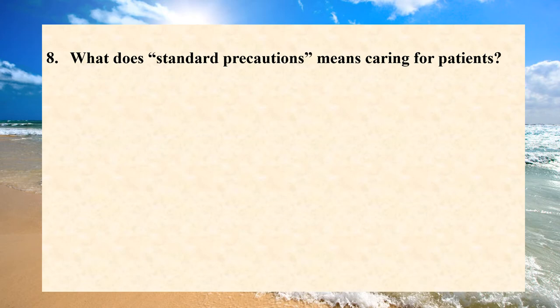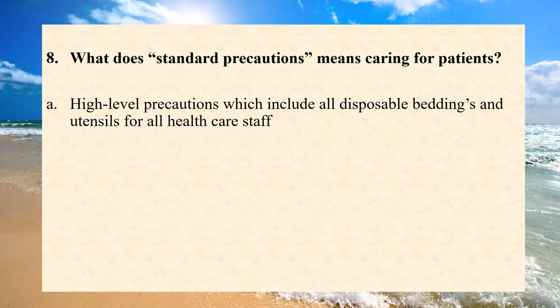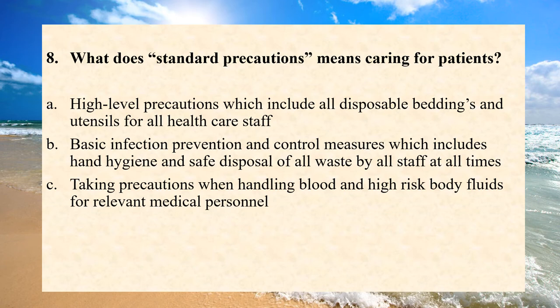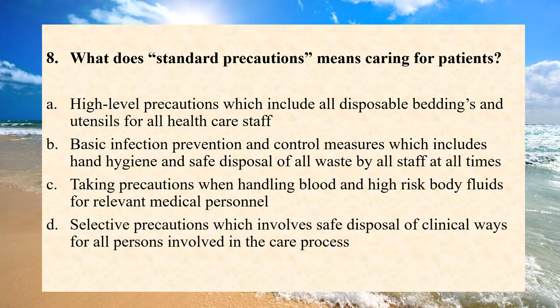What does standard precaution mean when caring for patients? A. High-level precaution which includes all disposable buildings and utensils for all healthcare staff. B. Basic infection prevention and control measures which includes hand hygiene and safe disposal of all waste by all staff at all times. C. Taking precaution when handling blood and high-risk body fluids for relevant medical persons. D. Selective precaution which involves safe disposal of clinical waste for all persons involved in the care process. Answer is B: basic infection prevention and control measures which includes hand hygiene and safe disposal of all waste by all staff at all times.